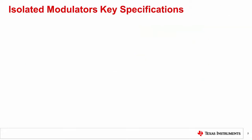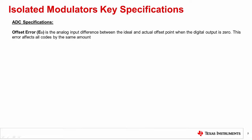When choosing an isolated modulator, several specifications have to be considered. Let's start with defining input offset error. A differential input signal of zero volts ideally produces a stream of ones and zeros that are high 50% of the time and low 50% of the time. Offset error is the analog input difference between the ideal and the actual offset point when the digital output is zero. This error affects all codes by the same amount. Keep in mind that offset error is dependent on changes over temperature, which is quantified by offset error drift.